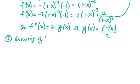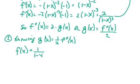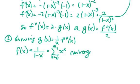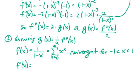Knowing that g of x equals one half of the second derivative, we can manipulate the geometric series. We know f of x is 1 over 1 minus x, and its series representation is the sum from k equals 0 to infinity of x to the k, which is convergent for x between negative 1 and 1.